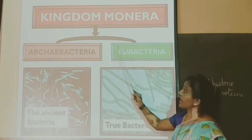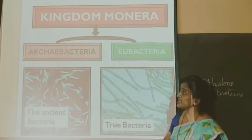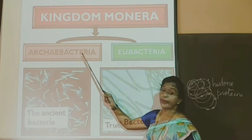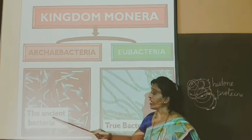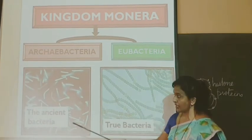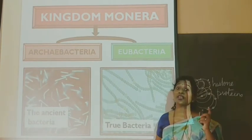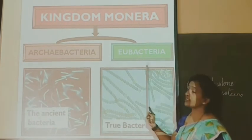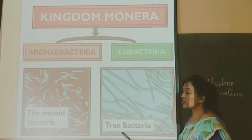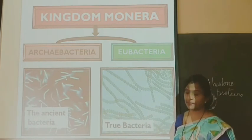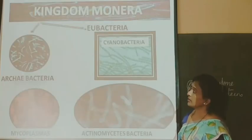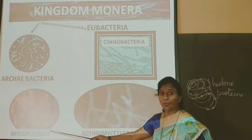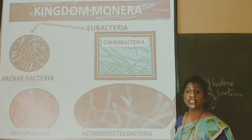Kingdom Monera is divided into two main categories: Archaebacteria and Eubacteria. Archaebacteria are also called ancient bacteria, indicating these organisms were the first to evolve, and then gave rise to Eubacteria, also called true bacteria. There are also two other forms under Kingdom Monera — Mycoplasma and Actinomycetes.